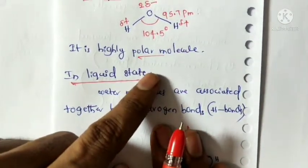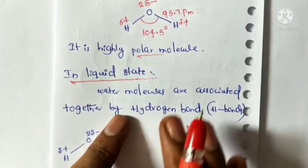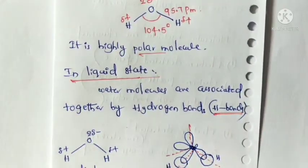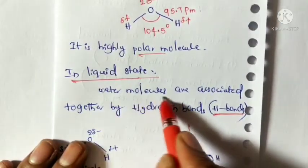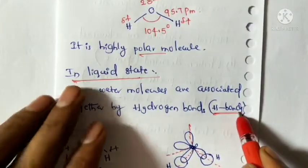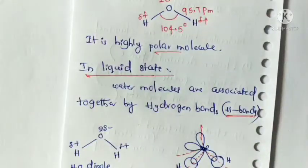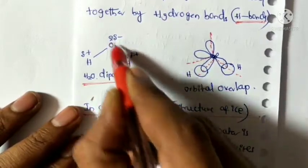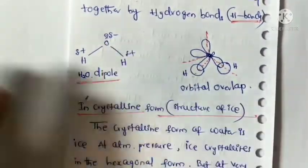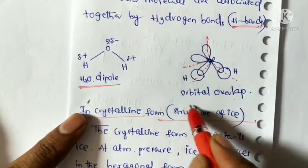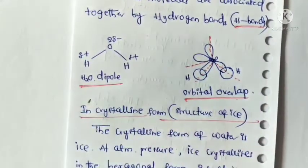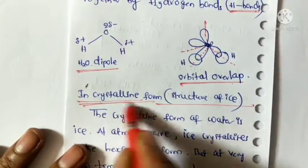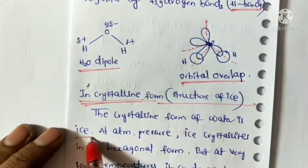In the liquid state, water molecules are associated together by hydrogen bonding. H₂O acts as a dipole due to the presence of partial positive and partial negative charges. The structure of water can be shown by an orbital overlapping diagram.